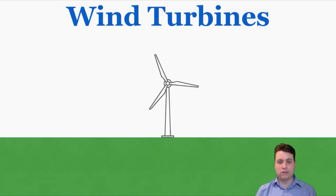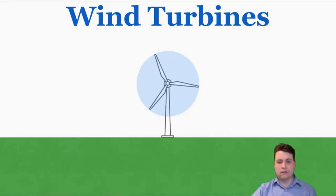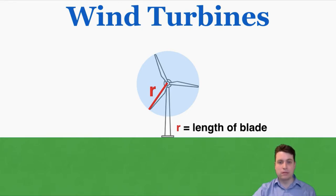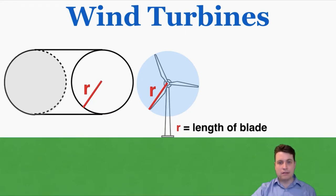I'm going to explain a moderately complicated equation for the power that results from a wind turbine. To do that I'm going to imagine a cylinder of air impacting the turbine. This turbine has a circular surface area that it turns around, so any wind going through that circular surface area would contribute to the spinning of the turbine. The radius of that circle is exactly equal to the length of one turbine blade. Any air outside that circle doesn't really affect the turbine, so we only need to focus on this cylindrical area.